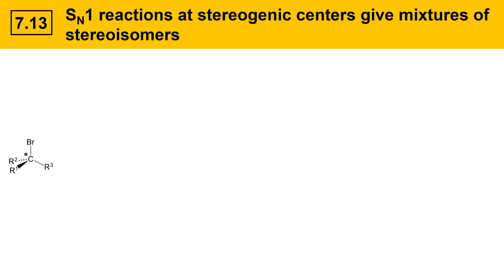This species has a stereogenic center, carbon indicated by a star. It has four different groups attached, which makes it a stereogenic center, and in the first step, the leaving group leaves. When it does, it generates the following carbocation. Notice this carbocation is planar, and the carbon no longer has four groups attached — that means it's no longer a stereogenic center, and the molecule has changed significantly.